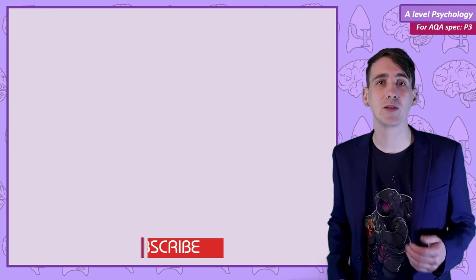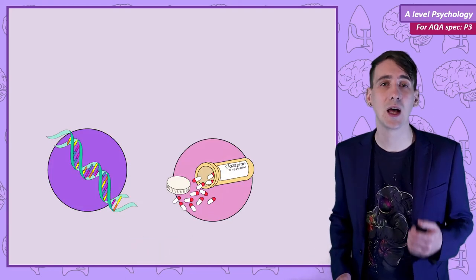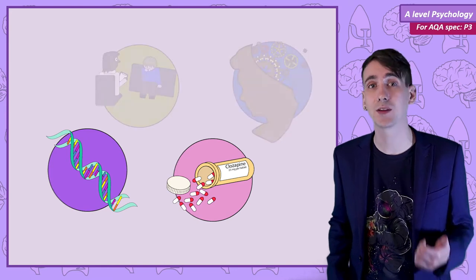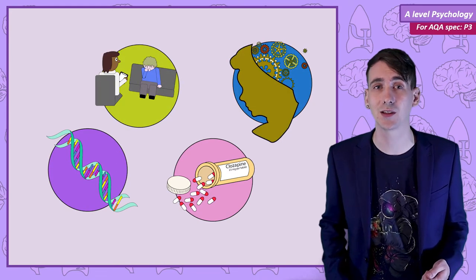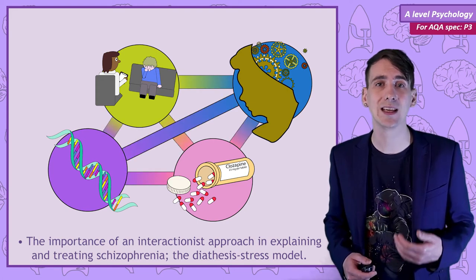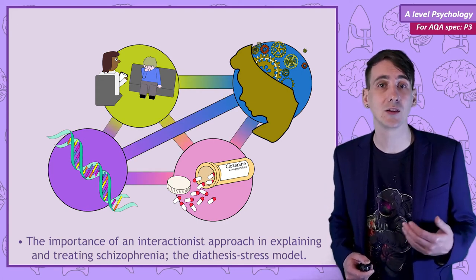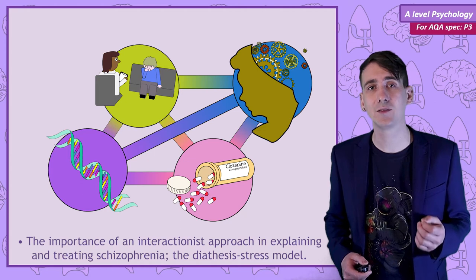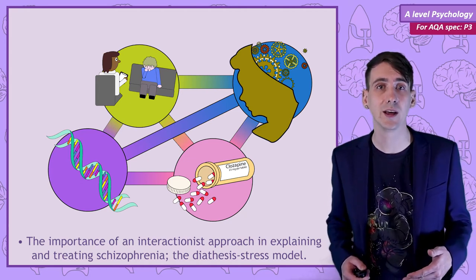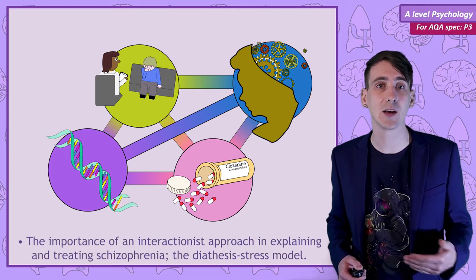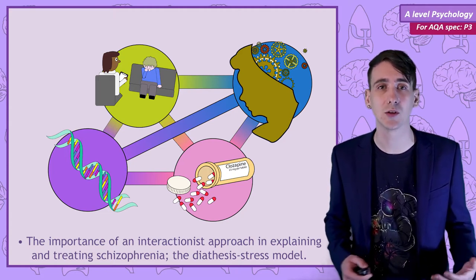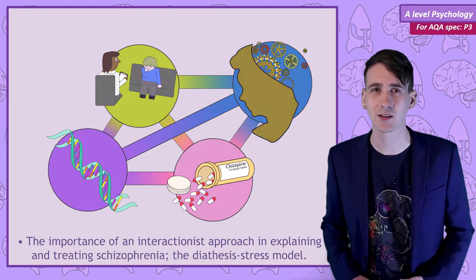In this video we are going to be bringing together what we have learnt so far about the biological approach to explaining and treating schizophrenia, and what we know about the psychological approach to explaining and treating schizophrenia. By bringing all of these ideas together we are going to be using the interactionist approach and discussing a model called the diathesis-stress model. Understanding this section of schizophrenia is also going to help us access evaluations that we can use when writing about the explanations and treatments covered so far.